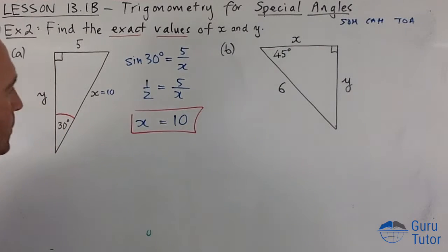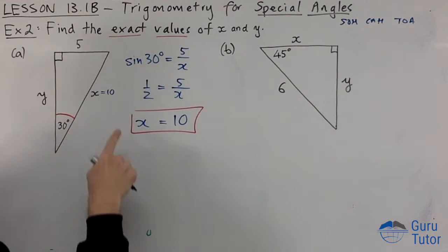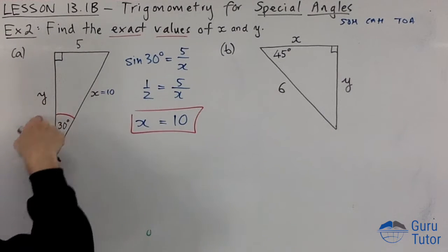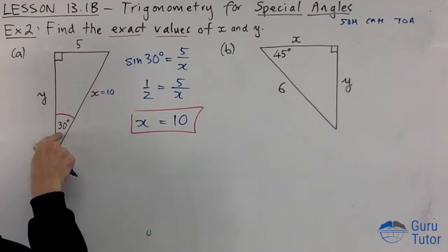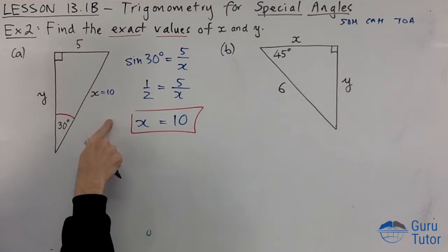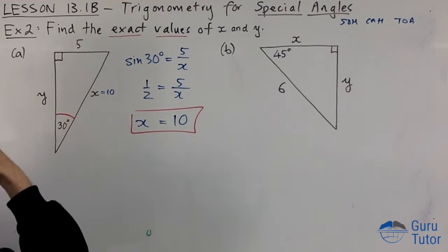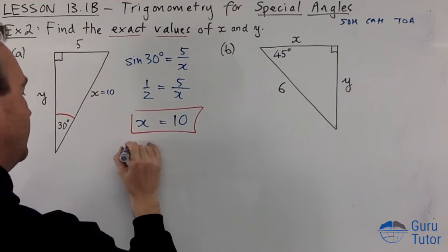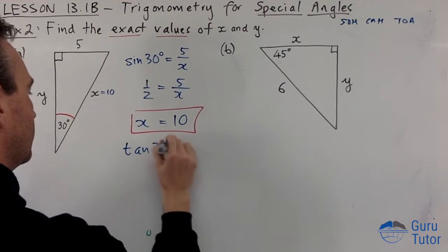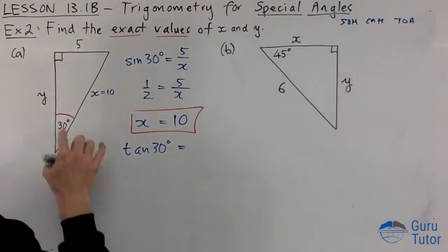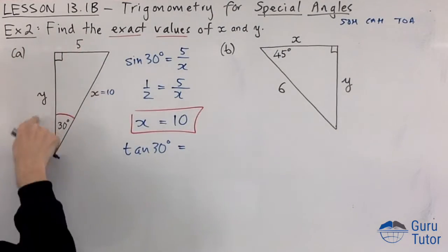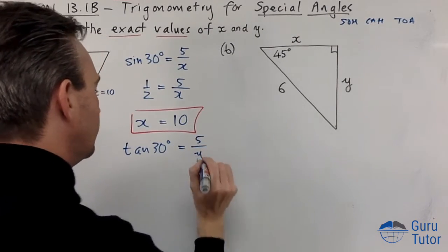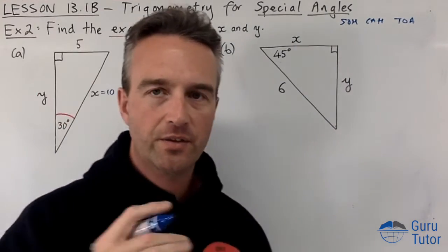Now how we're going to find y? Well you could use Pythagorean theorem here, you could do 10 squared equals y squared plus 5 squared, but we want to use trigonometry. 30, we have 10, we have - you can take your pick here, you could do cos or tan, it's up to you. I might do tan. Tan 30 equals, so tan 30 is opposite 5 over adjacent y, 5 over y. Then you've got to go, what's tan 30?